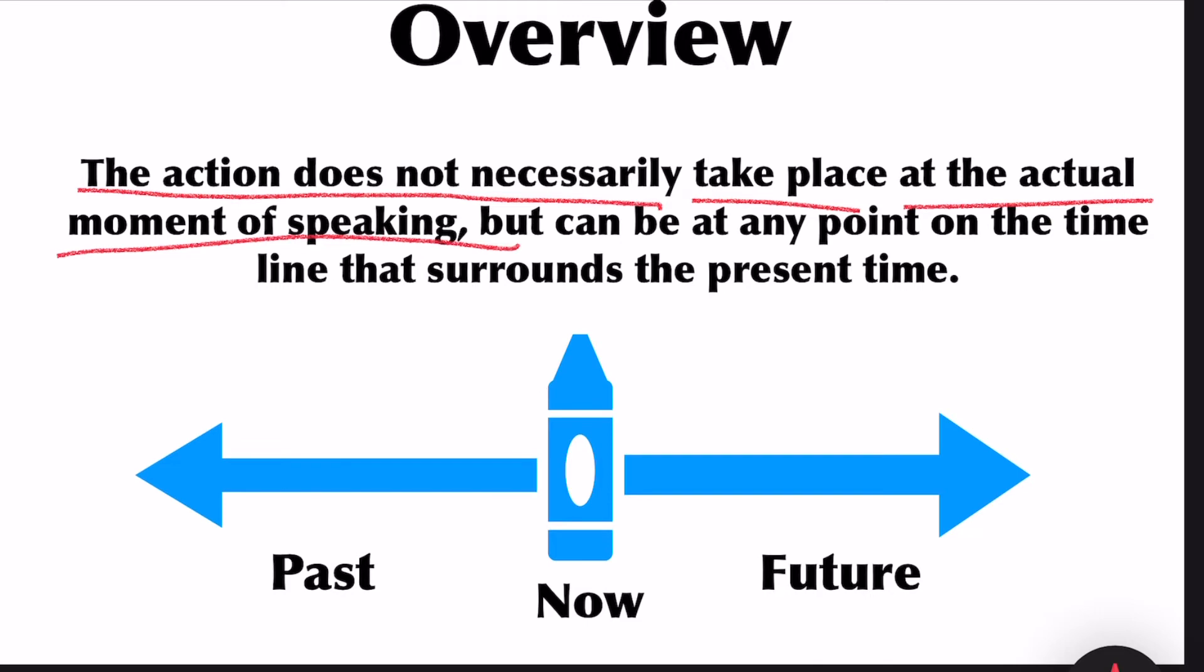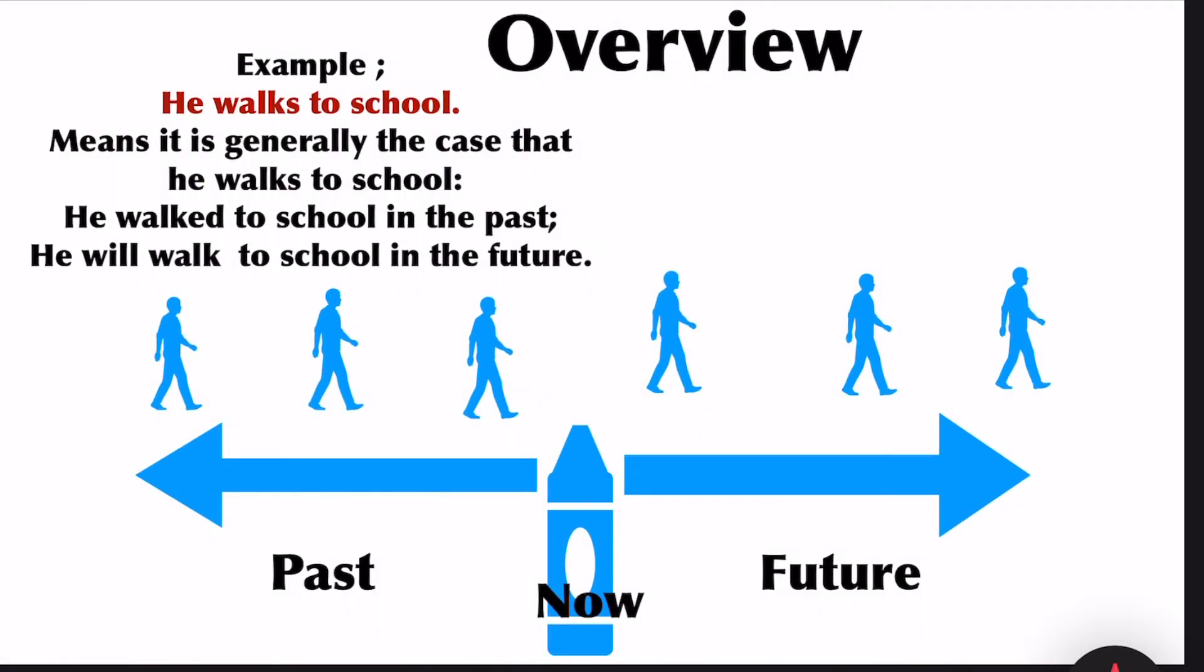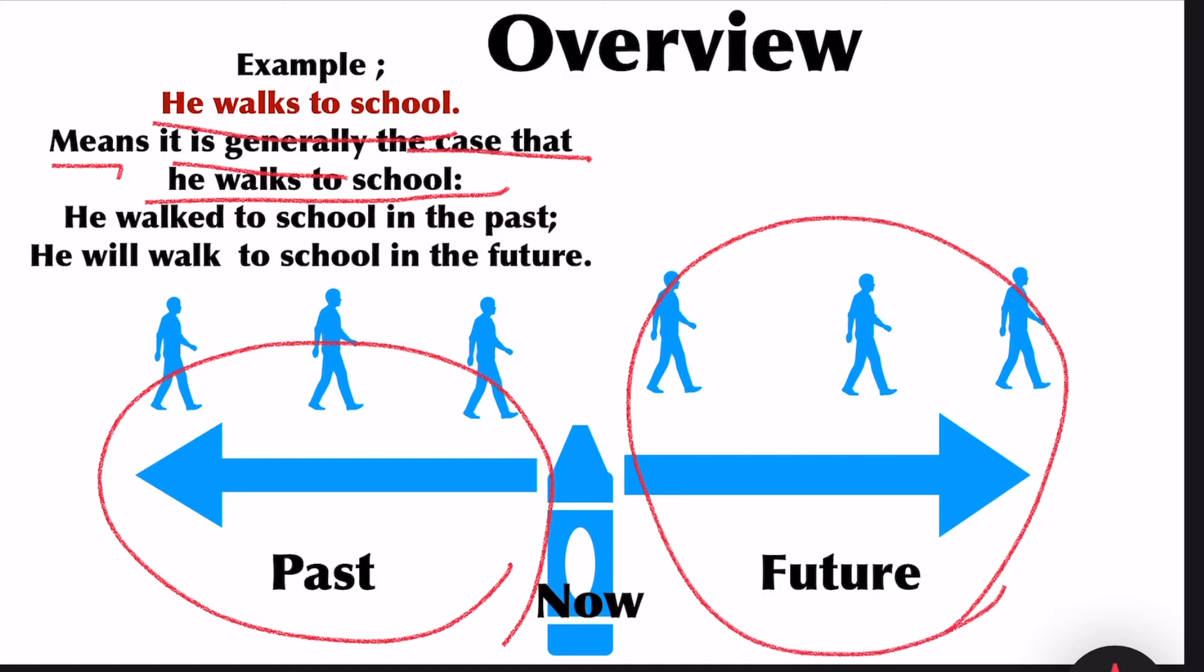Example: he walks to school means it is generally the case that he walks to school. He walked to school in the past and he will walk to school in the future. It's a true statement. Usually he goes to school by walking.